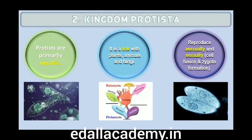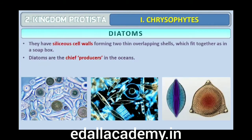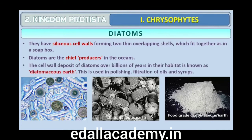First are chrysophytes. This group includes diatoms and golden algae (desmids). They are found in freshwater as well as marine environments. They are microscopic and float passively in water currents (plankton). Most of them are photosynthetic. In diatoms the cell walls form two thin overlapping shells which fit together as in a soap box. The walls are embedded with silica and thus are indestructible. Diatoms have left behind large deposits of cell walls in their habitat — this accumulation over billions of years is referred to as diatomaceous earth. Being gritty, this soil is used in polishing and filtration of oils and syrups. Diatoms are the chief producers in the oceans.